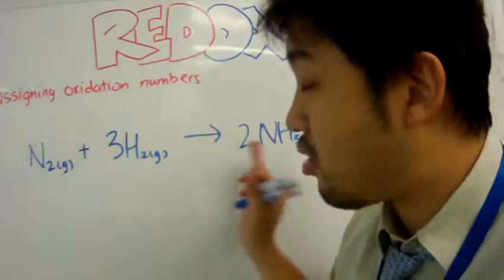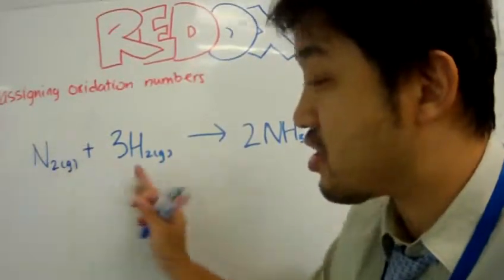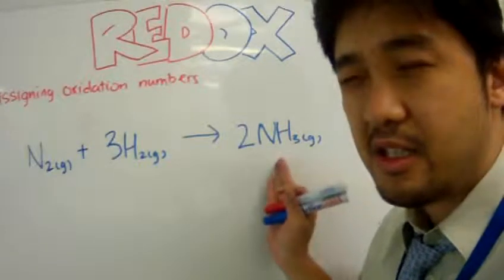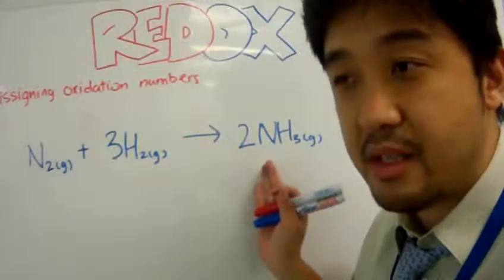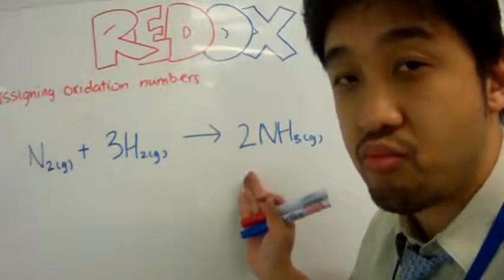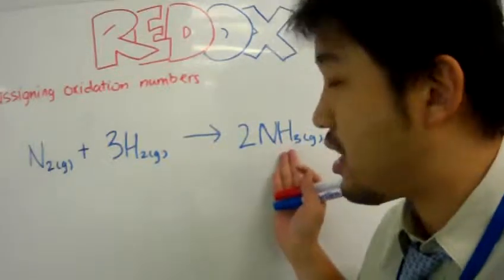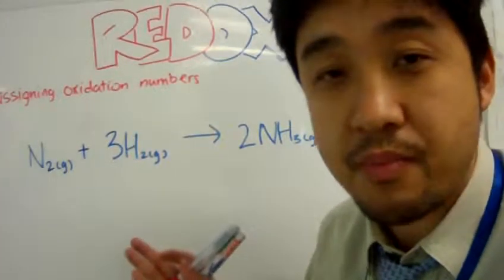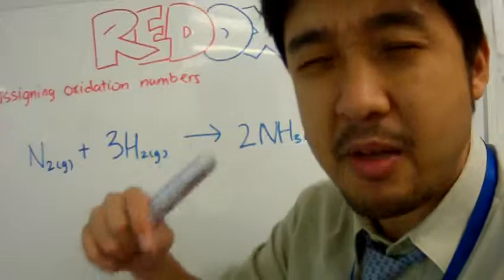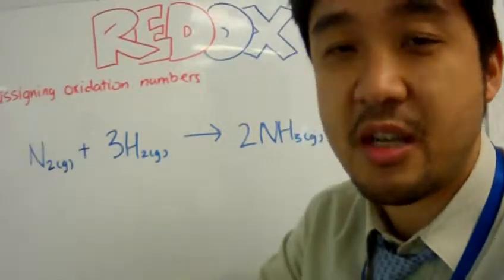These are all covalent compounds. They have no charges. So that's fine, but what about this? It's not a salt and it's not a solution. There are no charges for nitrogen and hydrogen. So what do we do? Well, we have a make-believe system in terms of assigning oxidation numbers.